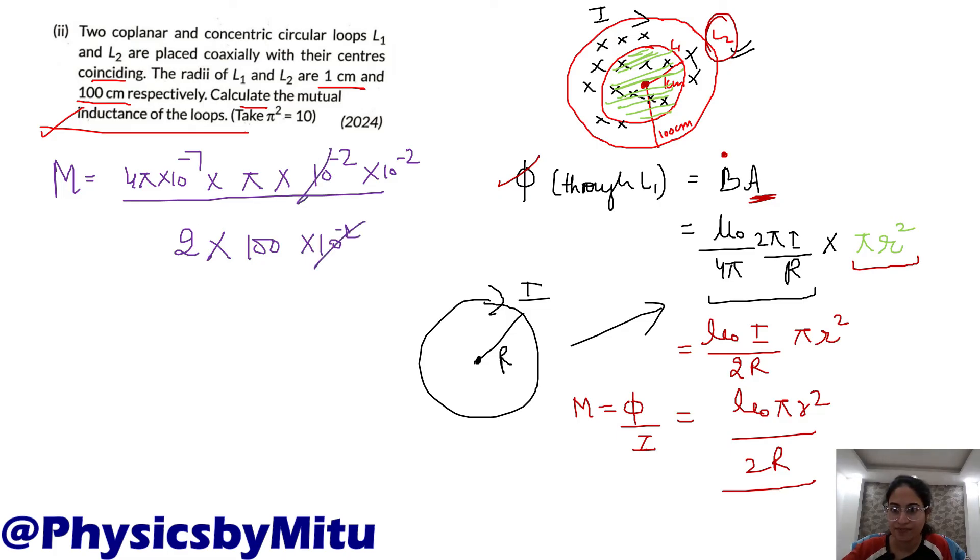So you get π². What power of 10? 2 into 10: 10 raised to the power minus 7 into 10 raised to power minus 4. This will be 2 into 10 raised to power minus 10 henry. This is the answer.